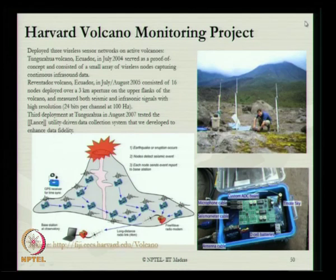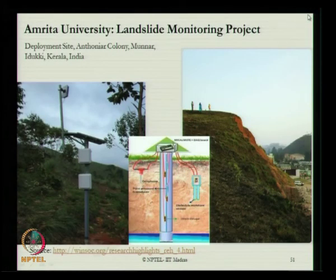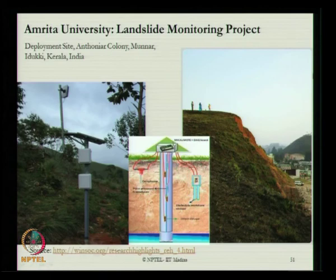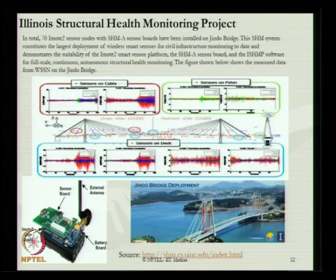Some interesting case examples: the Harvard Volcano Monitoring Project deployed three sensor networks on active volcanoes. The Ecuador deployment in July 2004 served as a proof of concept with a small array of wireless nodes. In Amrita University, a landslide monitoring project was carried out in Kerala using wireless sensor networking. The Illinois Structural Health Monitoring Project used this for health monitoring of a Jindo Bridge using SHM systems, with a typical gateway housing a sensor board, external antenna, battery, and IMote2 main board.